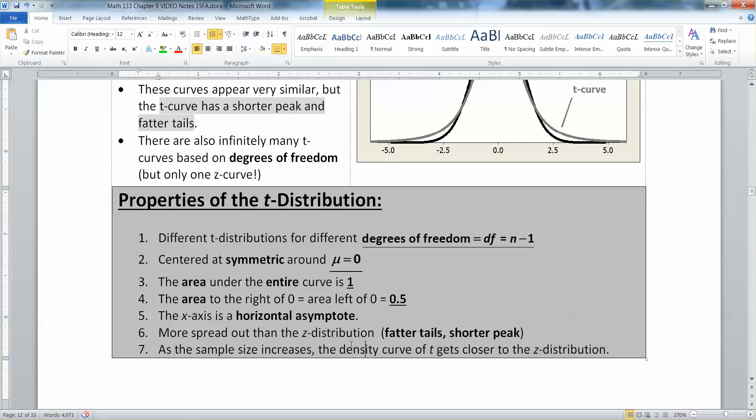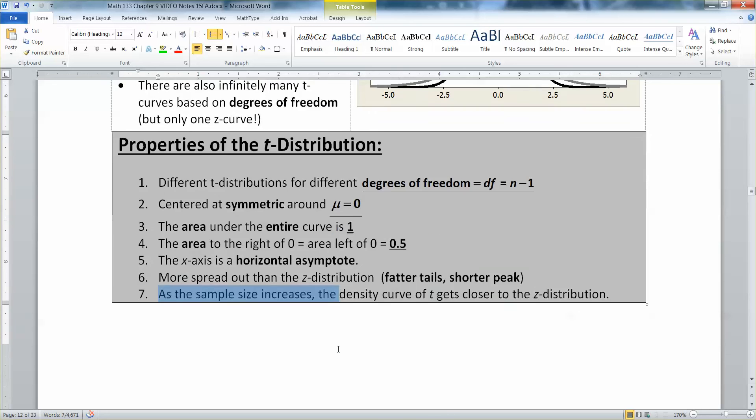As the sample size increases, the density curve gets closer to the Z distribution. That's interesting. There's infinitely many T curves. What I'm saying is that if you let your sample size get bigger, then the curve gets closer to that black curve, that Z curve that you really want.